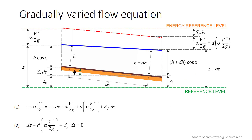Considering the reference level indicated here by the green line, we can write the Bernoulli equation between two cross-sections at a small distance ds. Rearranging the terms, we have equation 2, and we will now develop the different terms of this equation.